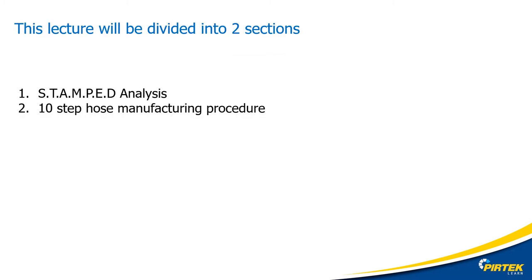We will be accessing all of the product catalogues published by Pertec from Pertec's website www.pertec.com.au. Today's lecture will be divided into two main sections. Section one is the Stamped Analysis — determining the type of hose that we need. And section two, the 10-step hose manufacturing procedure — manufacturing the hose.